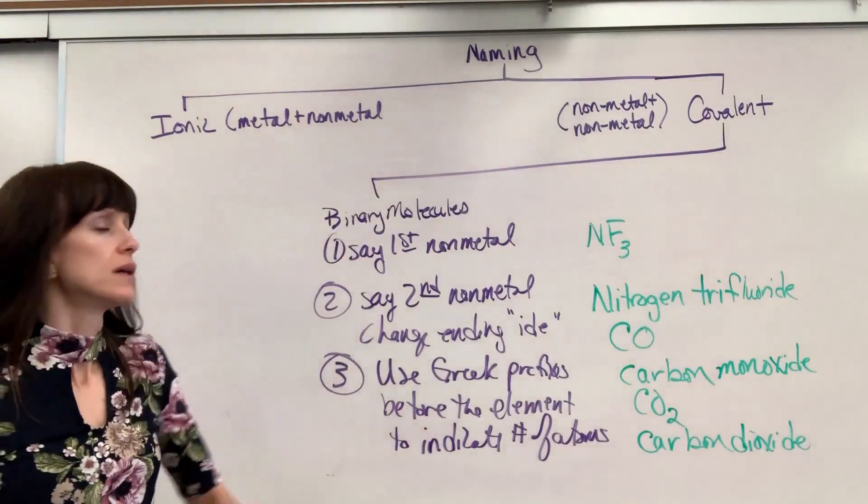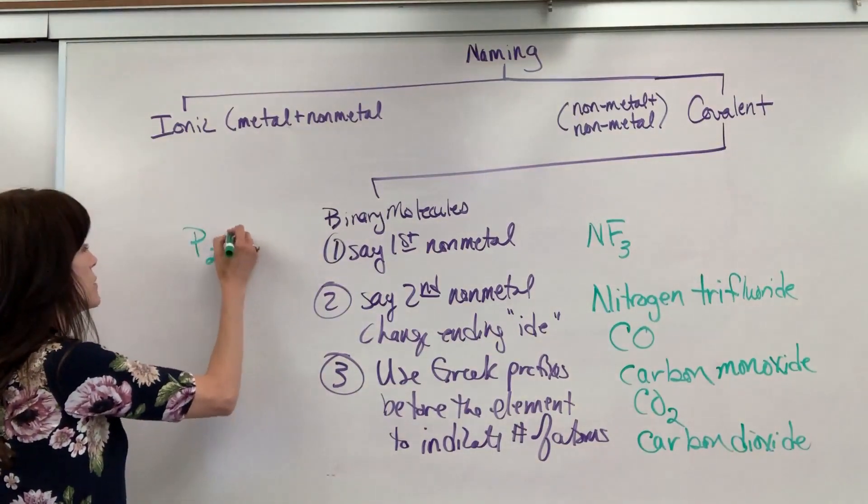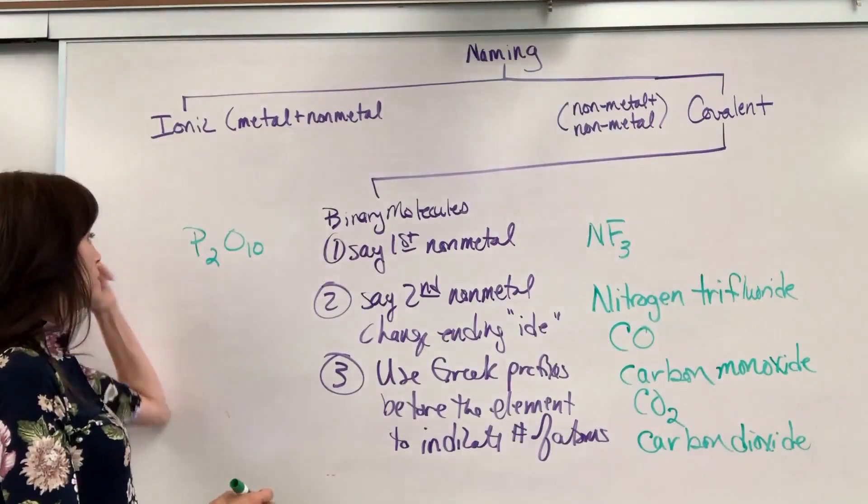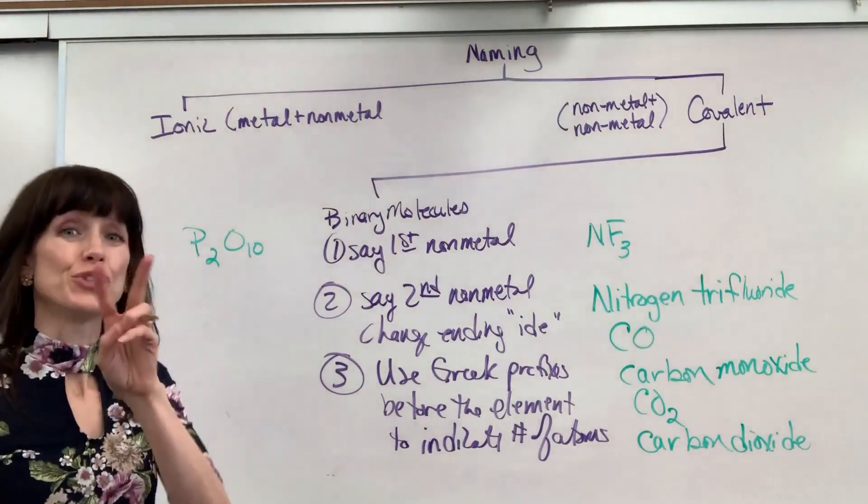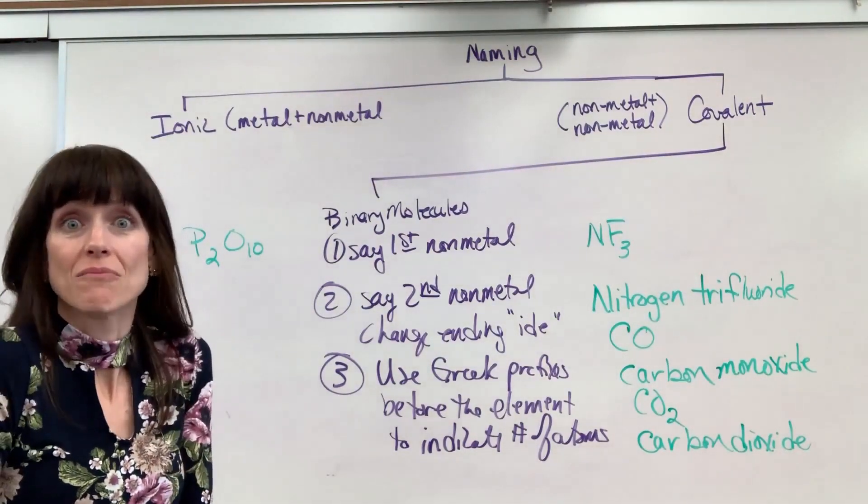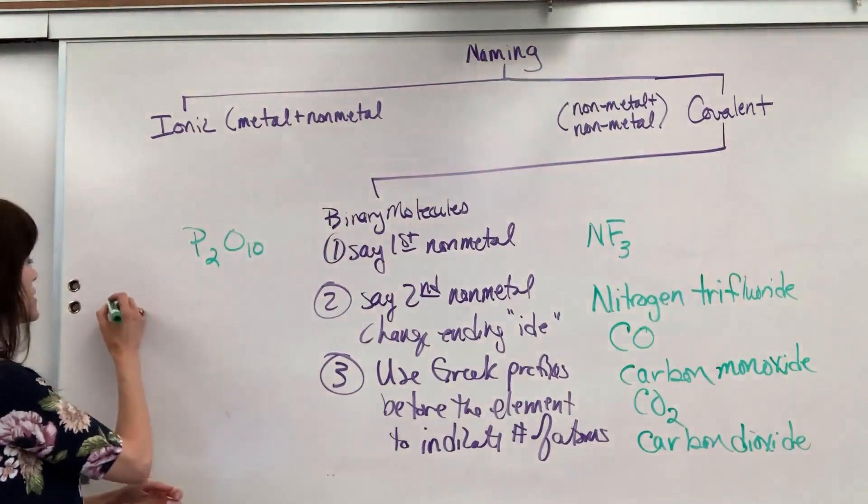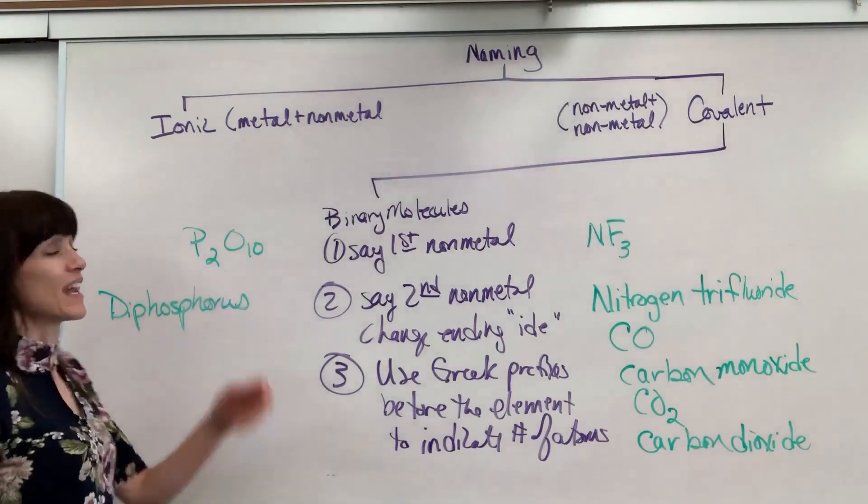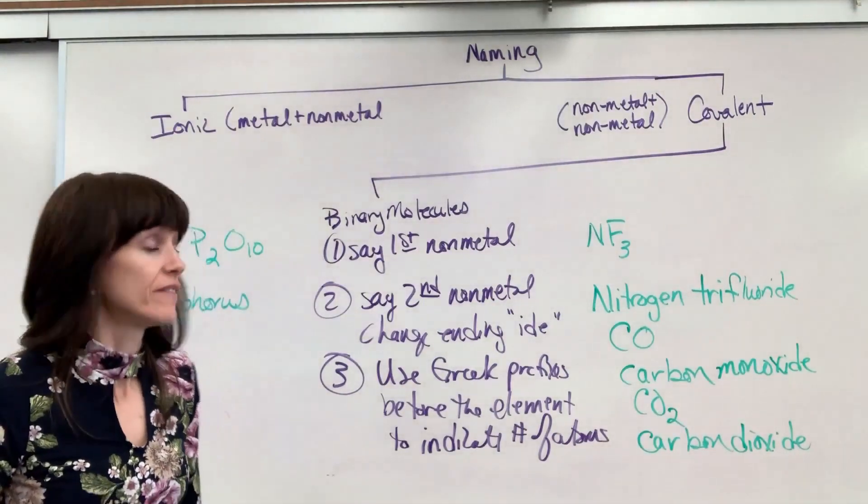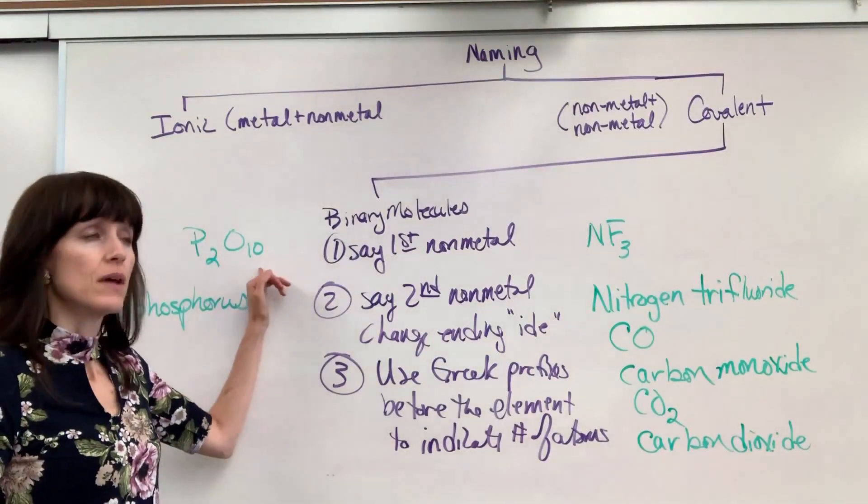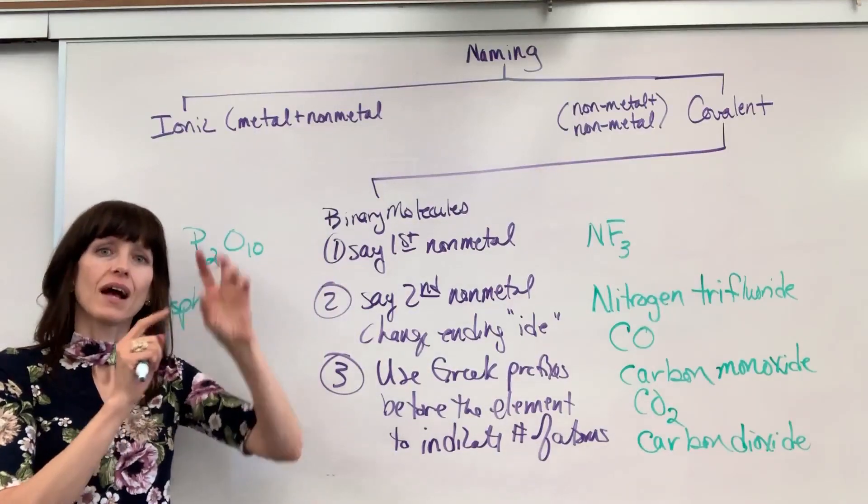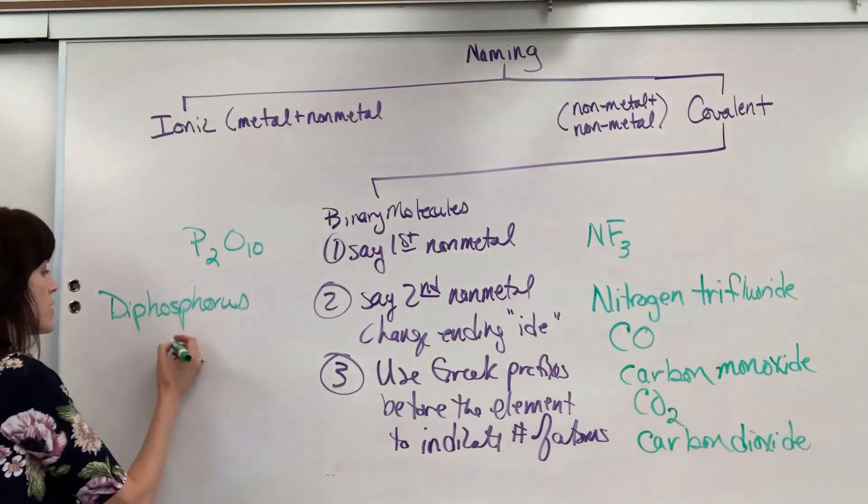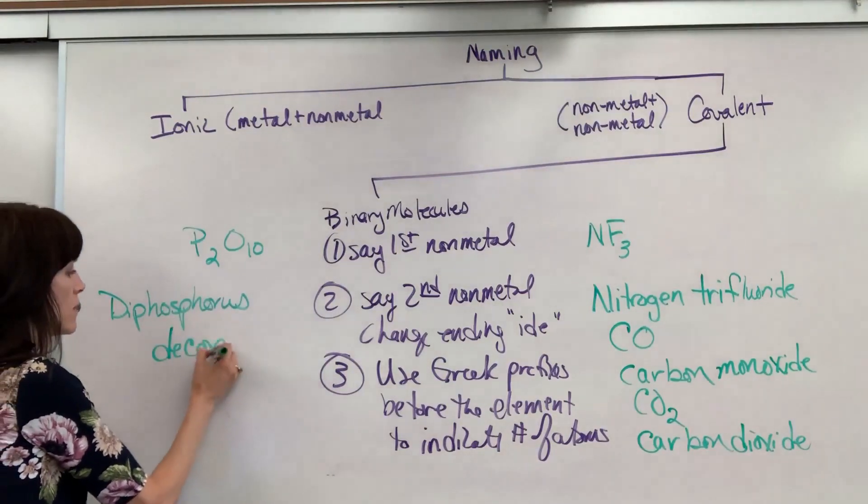Let's do another one. Let's do P2O10. So I'm going to say my first element, but I've got two. And I have to tell the reader how many there are. So this is going to be diphosphorus. And then I've got 10 of the oxygen. So that's deca. Now the A and the O together, I can drop the A. Decoxide. Diphosphorus decoxide.